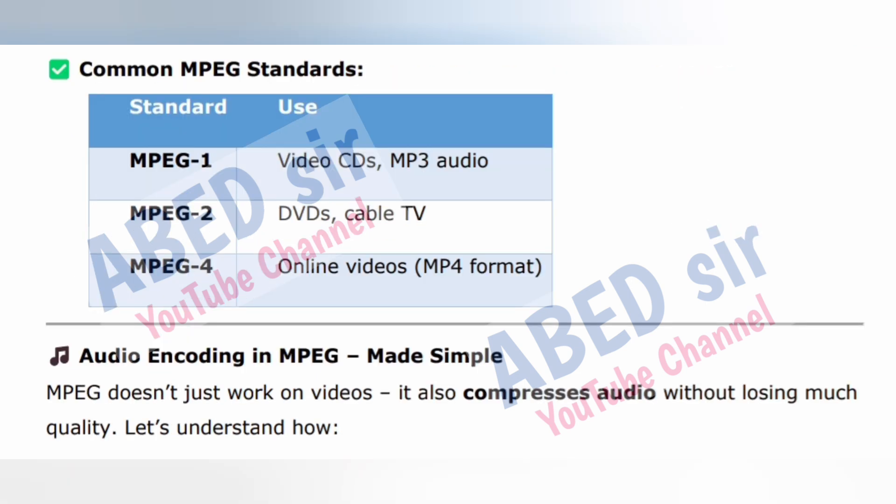Common MPEG standards: MPEG-1 for Video CDs and MP3 audio; MPEG-2 for DVDs and Cable TV; MPEG-4 for online videos and MP4 format. Audio encoding in MPEG made simple: MPEG doesn't just work on videos — it also compresses audio without losing much quality. Let's understand how.